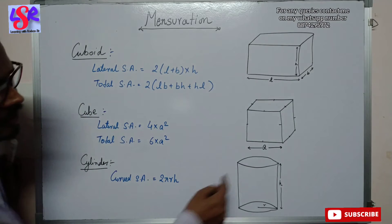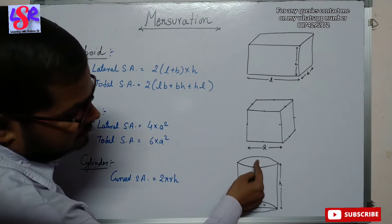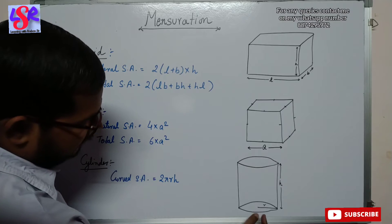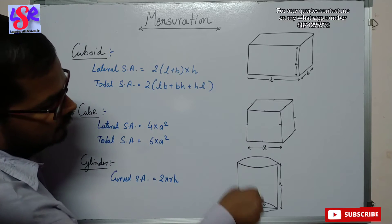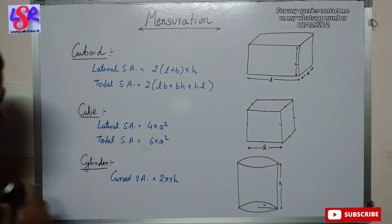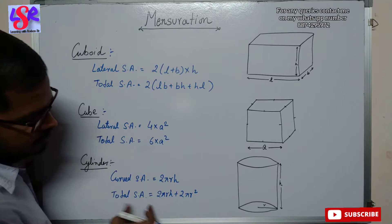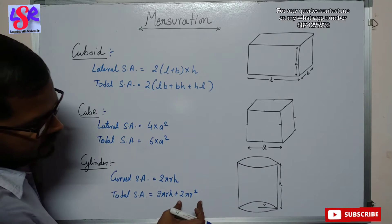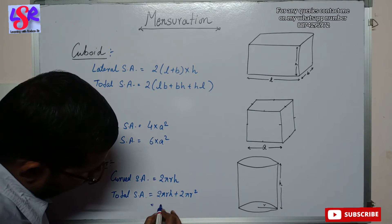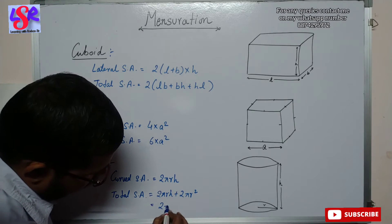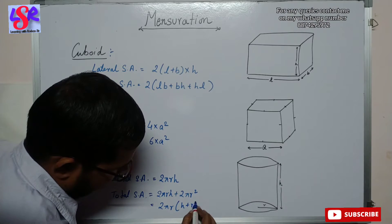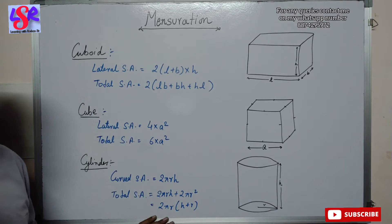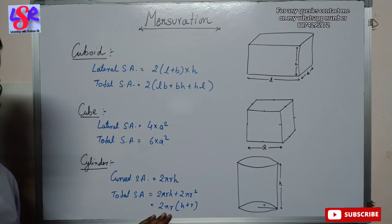For the total surface area of the cylinder, we include the two circular faces — top and bottom — so we add 2πR². Therefore, the total surface area equals 2πRH + 2πR², which can be factored as 2πR(H + R).